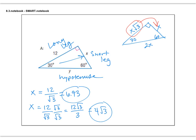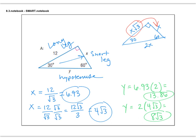Now we're going to find Y. Once we know X, to find Y we just double our answer. So 6.93 times 2 gives us an approximate answer for Y of about 13.86. Or we can get an exact answer: 2 times 4 root 3, which is 8 root 3. So these would be your approximate and exact answers for Y.